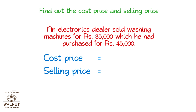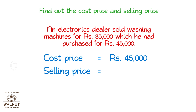An electronics dealer sold washing machines for Rs. 35,000, which he had purchased for Rs. 45,000. The cost price is Rs. 45,000. The selling price is Rs. 35,000.